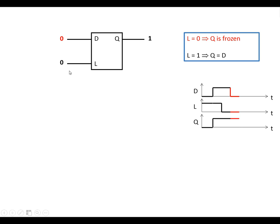Now we're going to make L go high, and D is low. So we're now in the transparent state, where Q copies whatever D is doing. So Q is now going to go low. And if I make D go high again, Q goes high again.